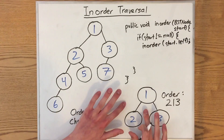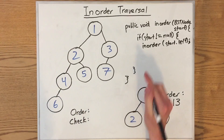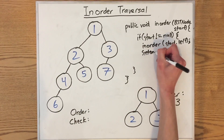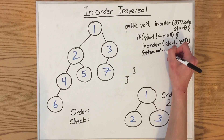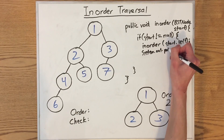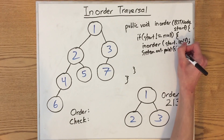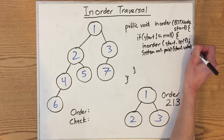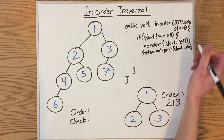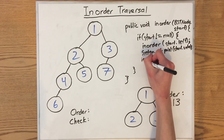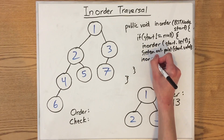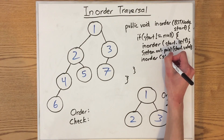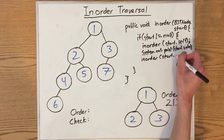After we finish processing the entire left subtree, then we print out the value of our root node. So we call system.out.print on start.value. And finally, after that, we have our final inorder call. We call inorder on our right subtree, which is start.right.